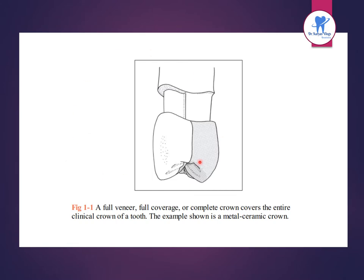This is a full veneer or full coverage crown, also called a complete crown. It covers the entire clinical crown of a tooth. An example is the metal ceramic crown.